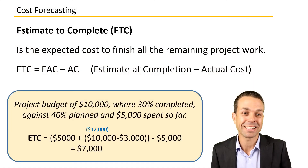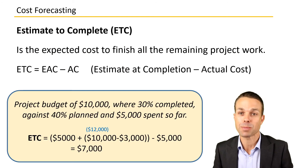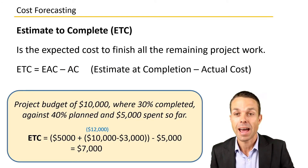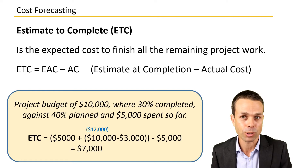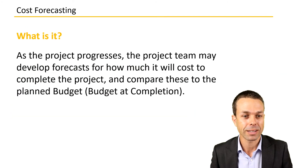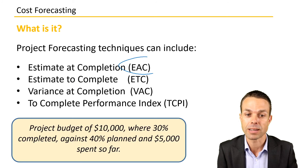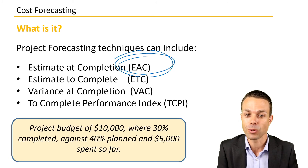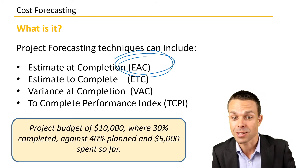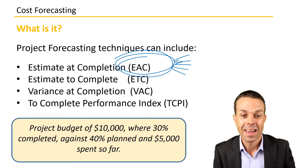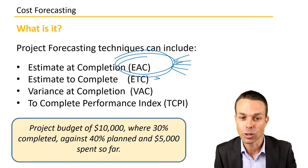Hi everyone, welcome back to this series on project management key concepts from the Project Management Body of Knowledge. We're delving into the second part of cost forecasting methods. We looked briefly at all the different ones — Estimate to Complete, Estimate at Completion — and now we're going to look at the Estimate to Complete, Variance at Completion, and To Complete Performance Index.